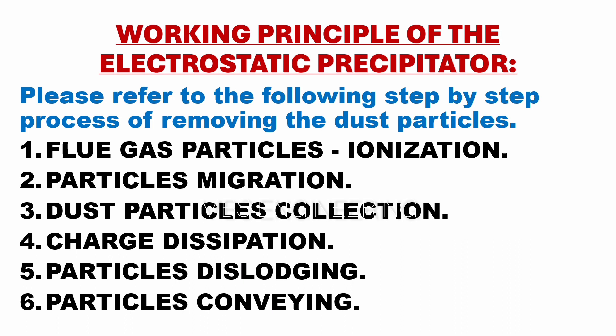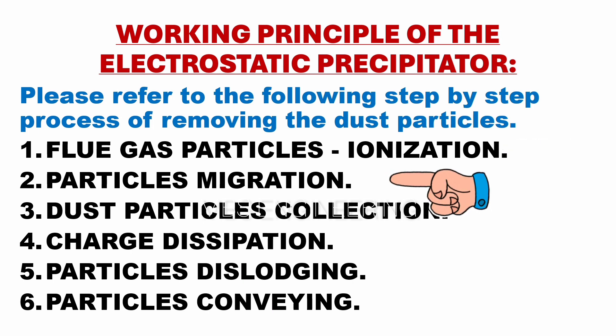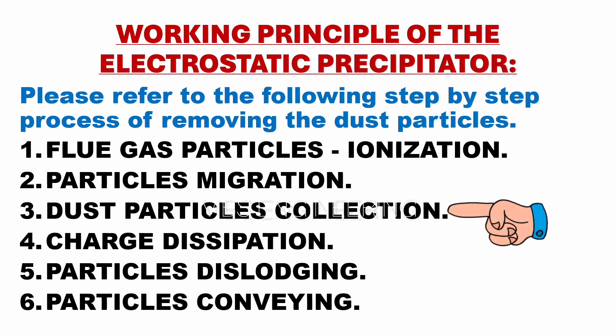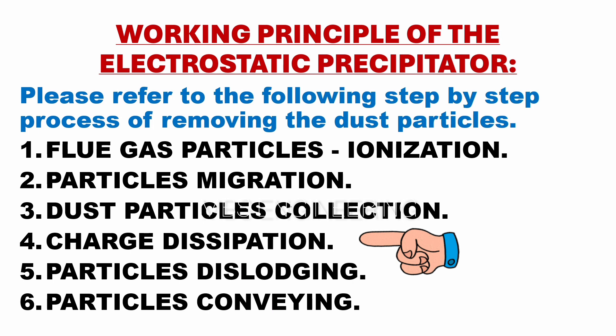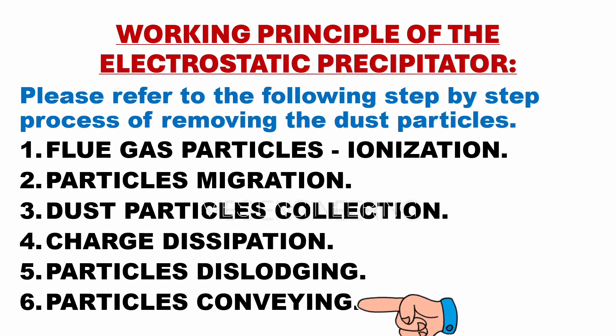The electrostatic precipitator working principle step by step consists of the following process for removing dust particles: the first step is flue gas particle ionization; the second step is particle migration; the third step is dust particle collection; the fourth step is charge dissipation; the fifth step is particle dislodging; and the sixth step is particle conveying.